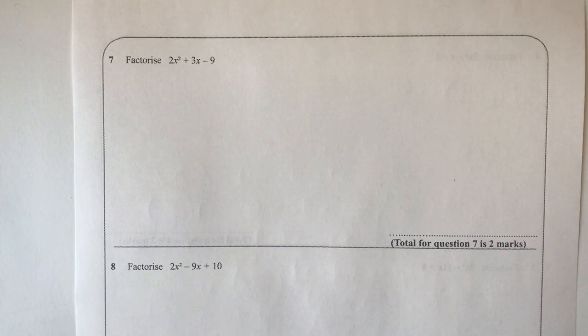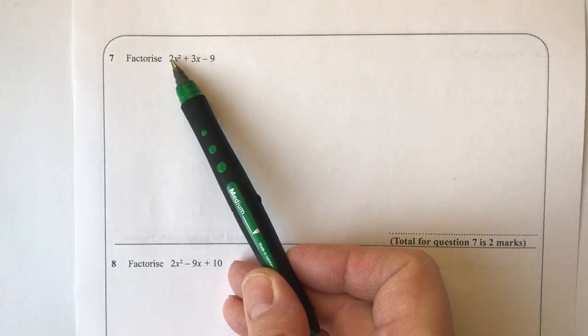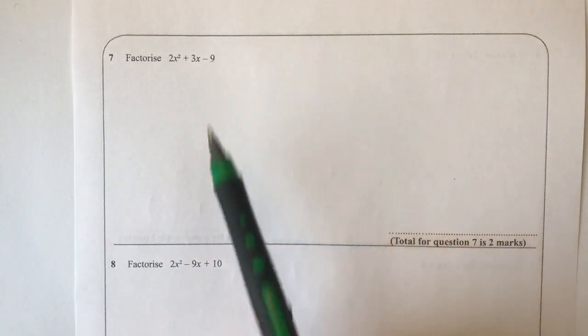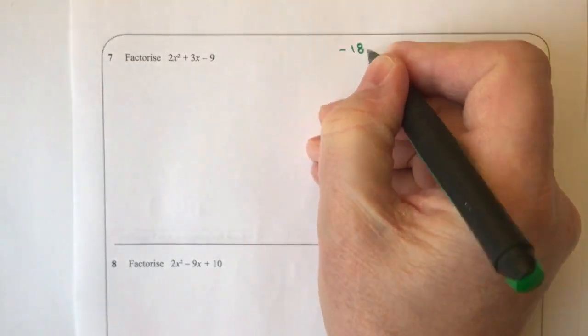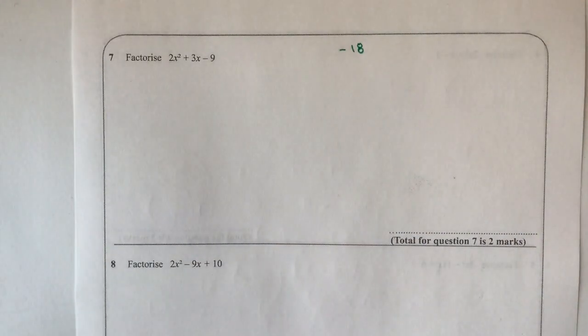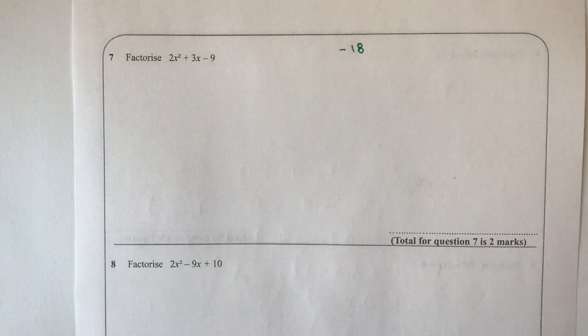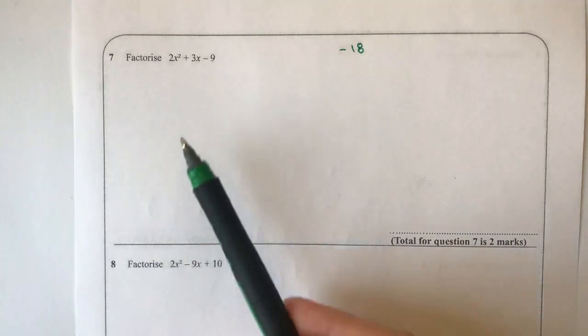There is a method that I tend to use for these sorts of equations. If you look at the rest of the videos in the playlist, that will also give you more examples. The way that we do it is we say 2 times minus 9 is going to give me minus 18. Then what I'm looking for is two factors of minus 18 that when I multiply them together will make minus 18, and when I add them together will make positive 3.